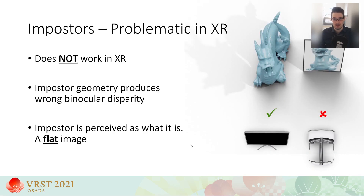The impostor illusion, however, does not work in XR anymore, as the underlying geometry fails to reproduce the correct binocular disparity cues. An impostor is simply perceived as a flat image, even when viewed from the correct viewpoint.